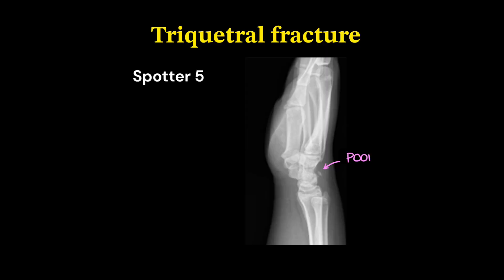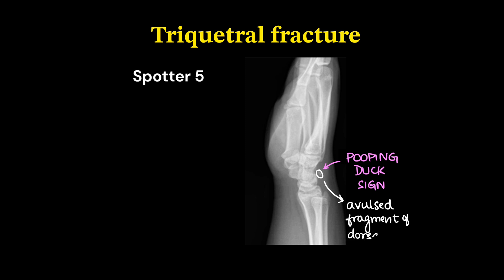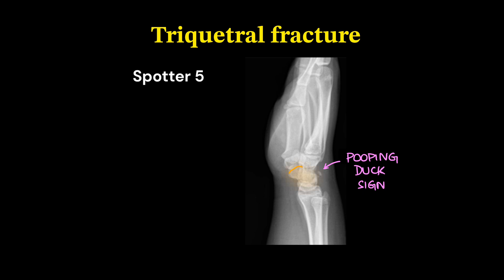This is an interesting case depicting a triquetral fracture, known as the pooping duck sign. There is a small avulsed fragment of the dorsal cortex of the triquetrum which you can see. It is called the pooping duck sign because the scaphoid forms the body of the duck, the avulsed fragment is the poop, and the wing of the duck is formed by the lunate bone.